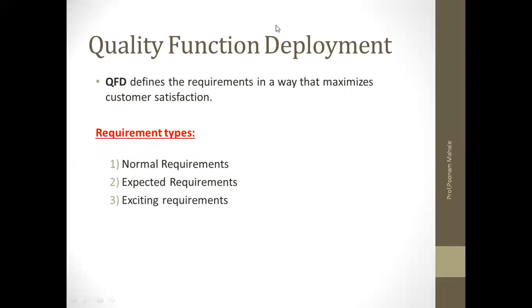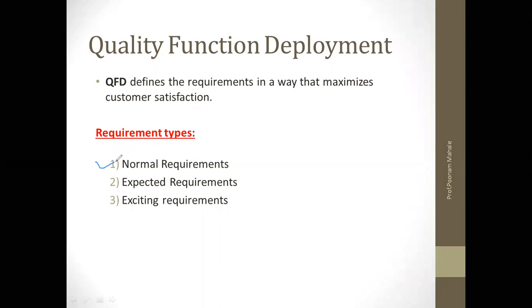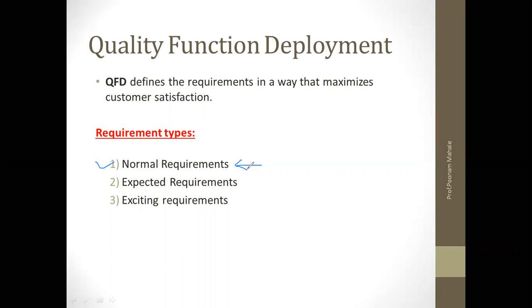Normal requirements are the requirements that are clearly stated by the customer and hence must be present for customer satisfaction. The customer wants these requirements in the product. For example: graphics, display, specific system functions, and specific output format. These are requirements clearly stated by the customer, and the product should contain them.